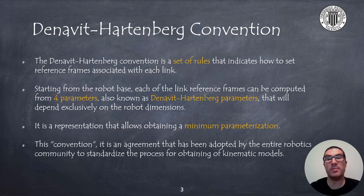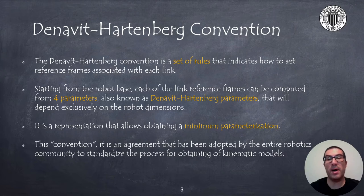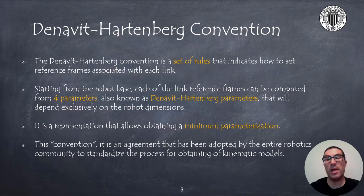The Denavit-Hartenberg Convention is nothing more than a set of rules that allow us to associate a reference frame to each of the robot links, regardless of the geometry of the link. We can apply this convention to robots with revolute or prismatic joints, but other joint types such as cylindrical or spherical joints can also be used, since they can be seen as a composition of the previous joints. Starting from the robot's base, we compute reference frames for each link and obtain four parameters associated with each transformation, depending exclusively on the robot dimensions. It is a minimum parameterization and, for this reason, it has been adopted as a convention — an agreement in the robotics community to standardize the process of obtaining kinematic models.